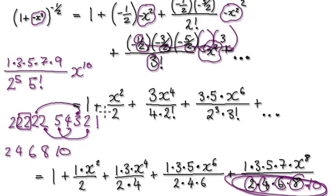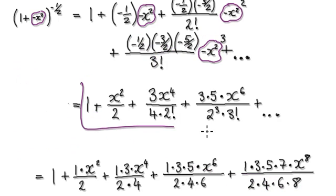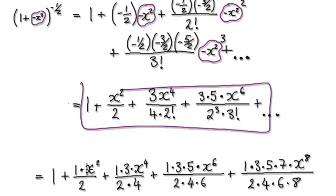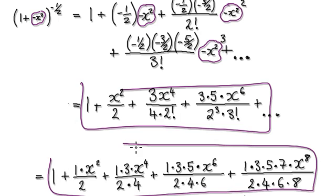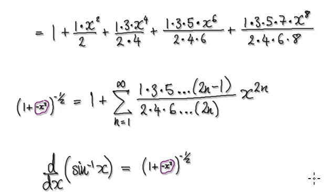So if you continue the pattern, this weird thing here simplifies to something nice and simple. From here, that will then take you to here. It's a nice simple pattern: 2, 4, 6, 8, and so on. So that will then take us to this result here, and I will continue in the next video.